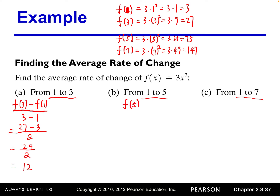For part b: f(5) minus f(1) over 5 minus 1. f(5) = 75, f(1) = 3, and 5 minus 1 = 4. So we have 72 over 4, which gives us 18. The average rate of change from 1 to 5 is 18.